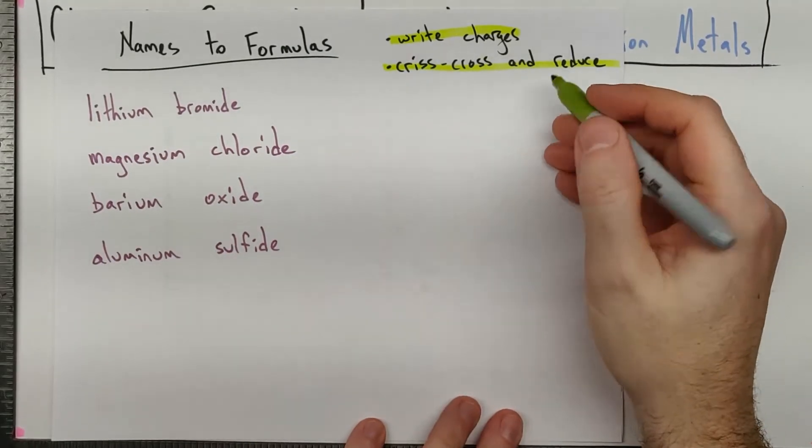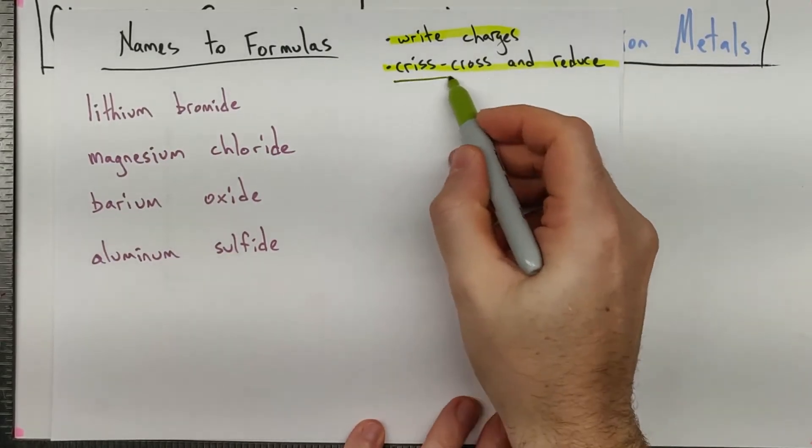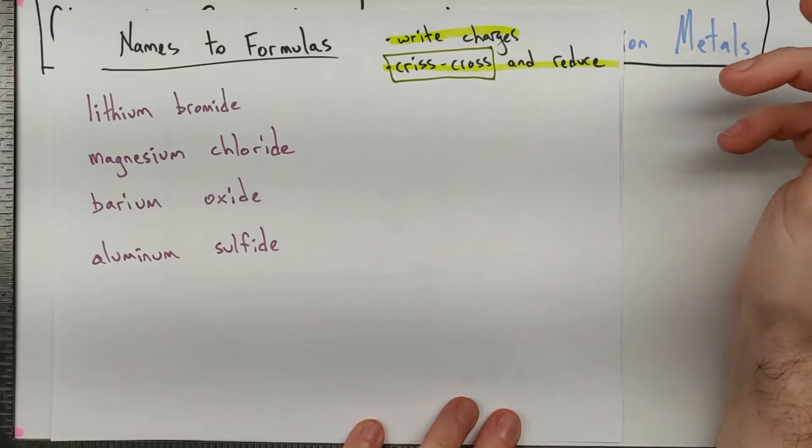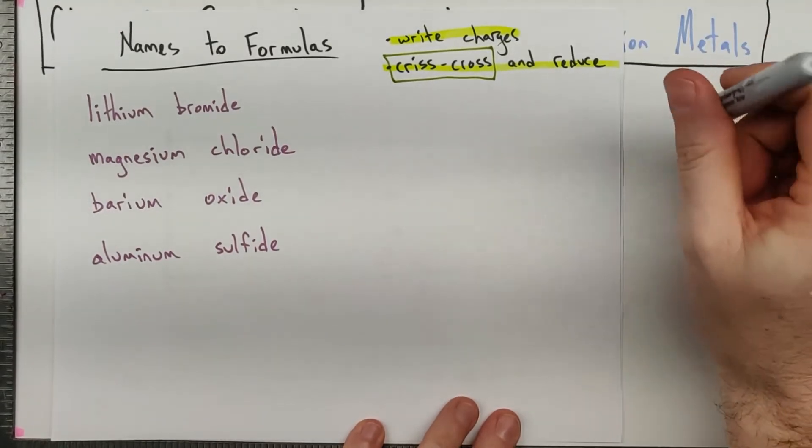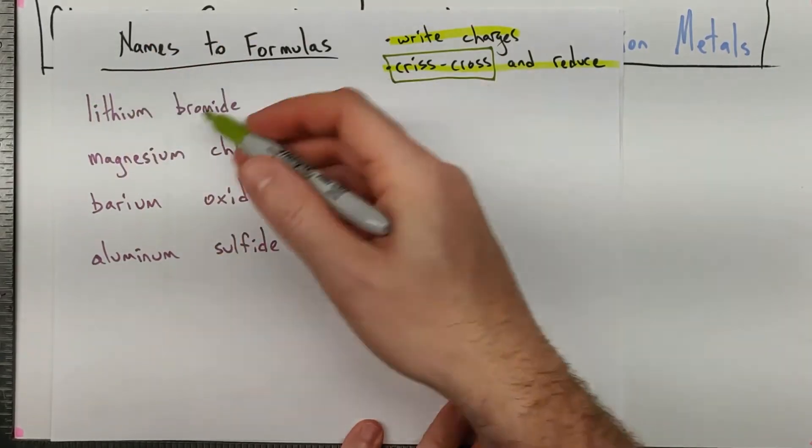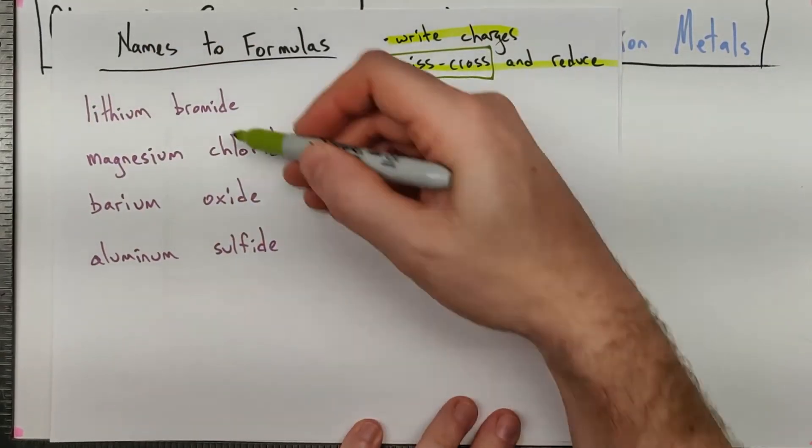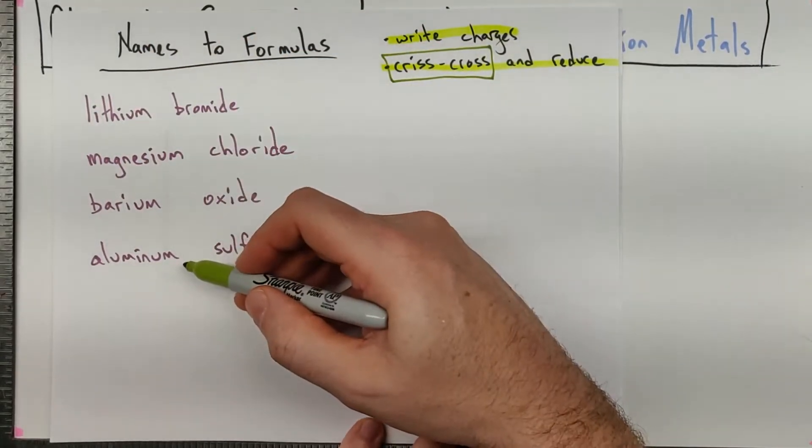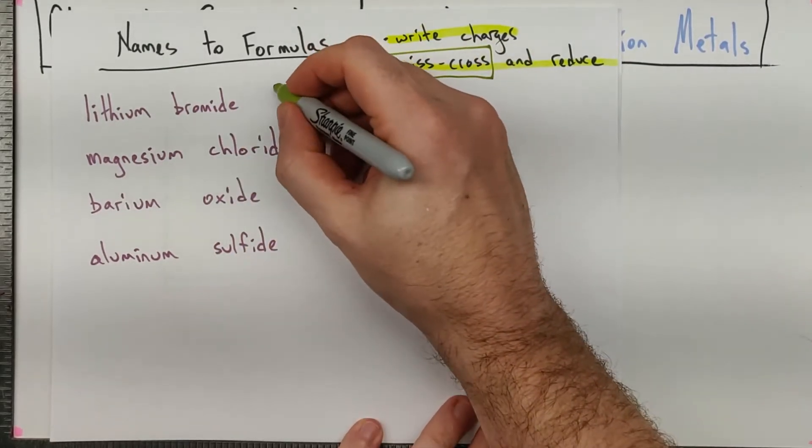If you're wondering why we're going to start in this order, it's because this crisscross idea is going to be what we use to figure out the Roman numerals when we're taking formulas and turning them into names. So, in this basic idea here, we need to get the charges. And in a case like this, all of those charges are on the periodic table. So, we'll work rather quickly.